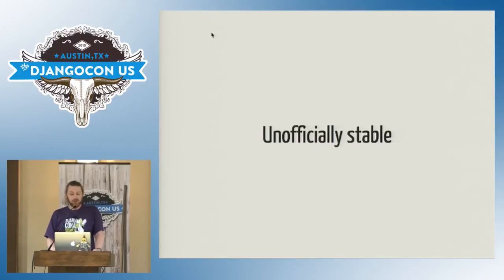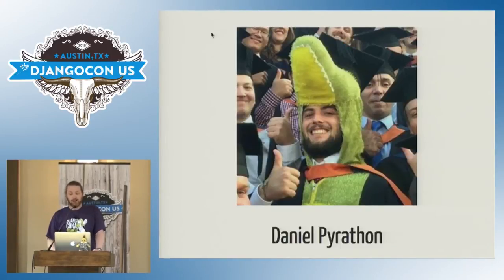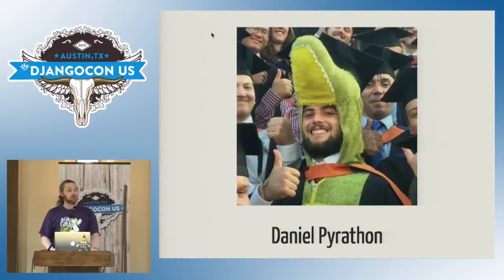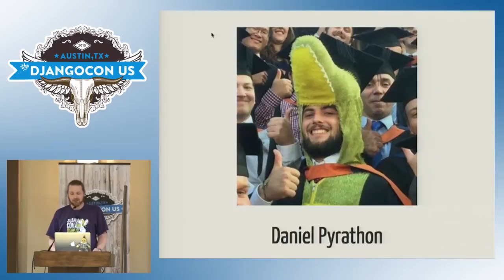Last year, as part of the Google Summer of Code, Daniel Pyrathon took the job of clearing out all that cruft that had accumulated in the API so that we could formally document and publish Django's meta API. This is Daniel, graduating from university last year. As you can tell, he's a very serious, very somber, quietly spoken individual.